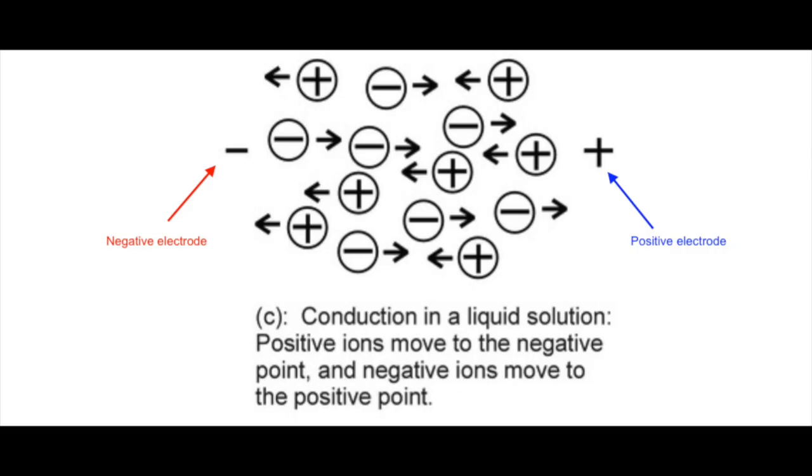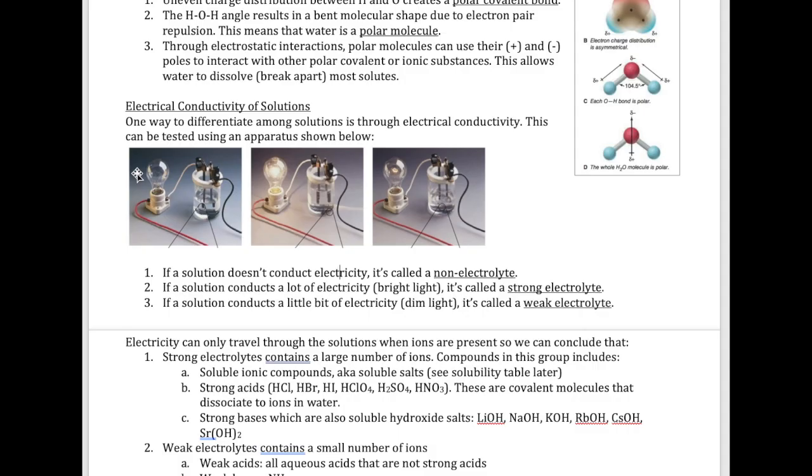Unless you have ions, electricity, which is flow of electrons, can't really go through that solution. When we see the light bulb completely off, we know that solution doesn't contain any ions. When we have that type of solution, we call that a non-electrolyte. When we see either a really bright light bulb or a light bulb that's just not very strong, we call these solutions electrolytes. If it's really bright, we call the solution strong electrolytes. If it's dim, we call it a weak electrolyte.